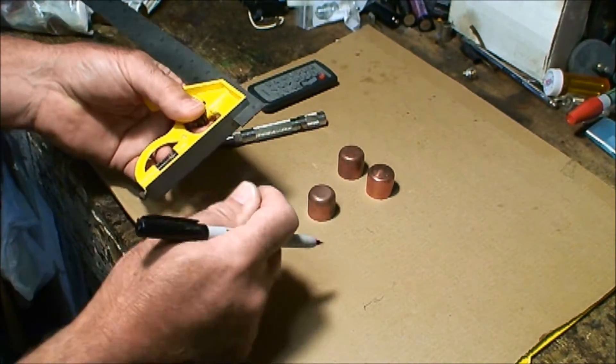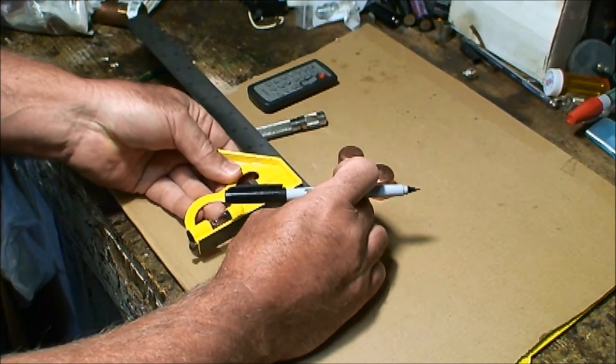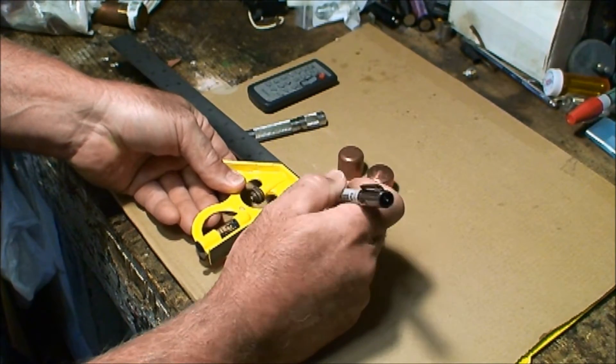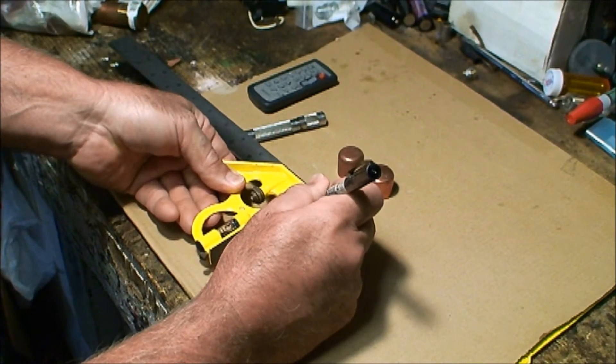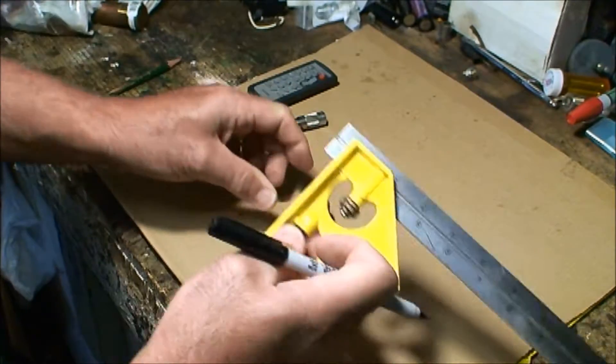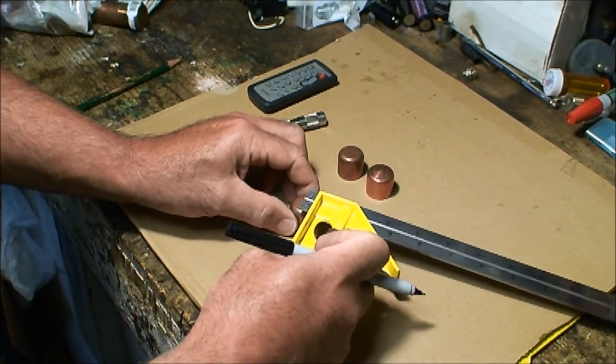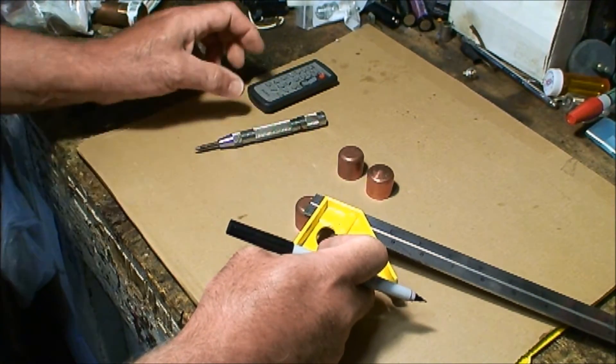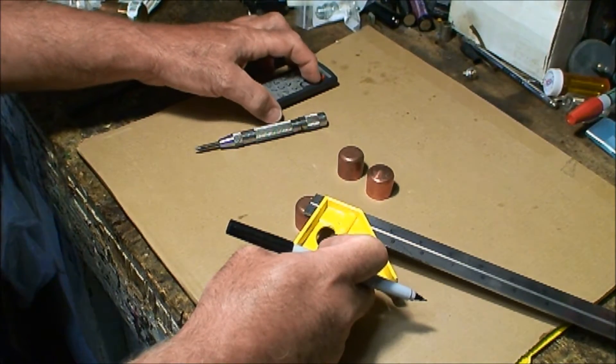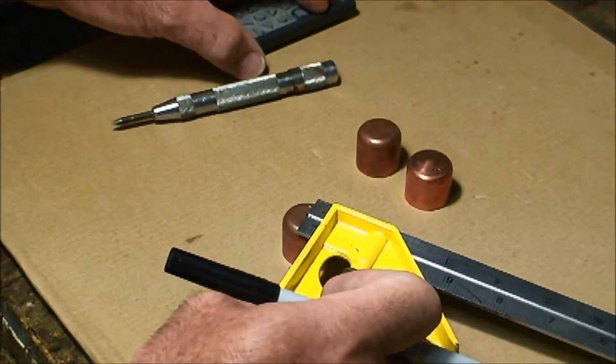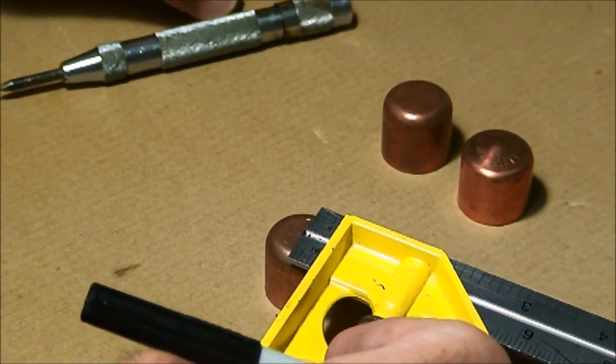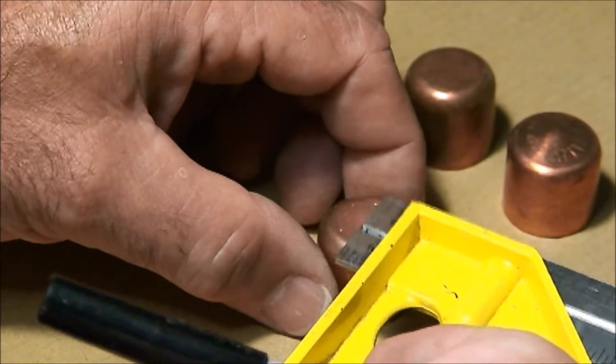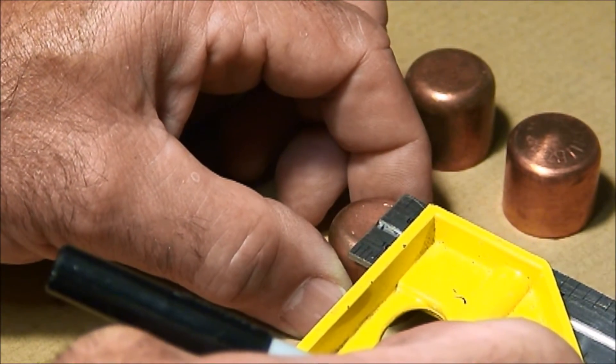Take your square, go left to right, make a mark. Go to the opposite direction and double check that mark.